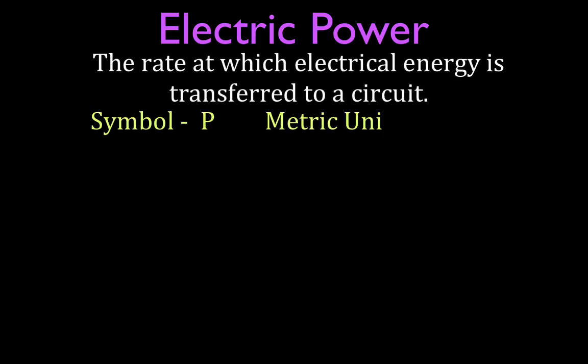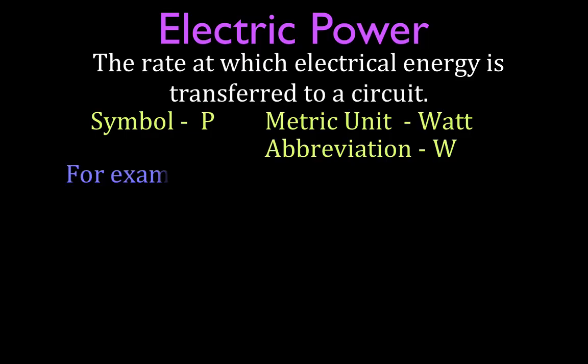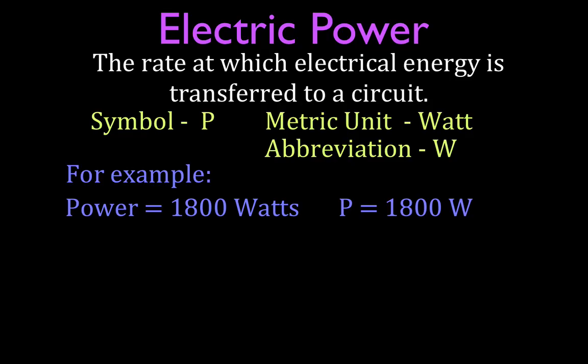For some real basics about electric power, whether they're talking about mechanical or electric power, it has the symbol P. It has the units, the watt, which has the abbreviation capital W. For example, we would say the power is equal to 1800 watts. We write P is equal to 1800 W. We don't say P is equal to 1800 W, we just say power is equal to 1800 watts.